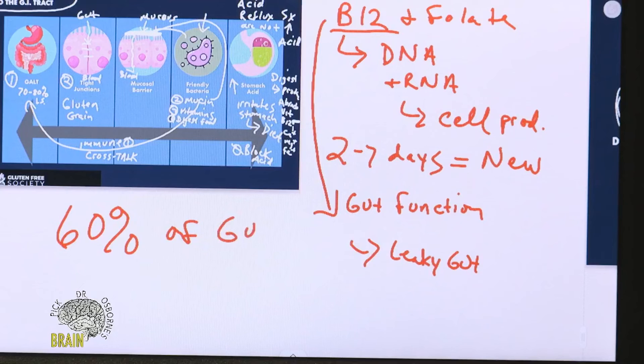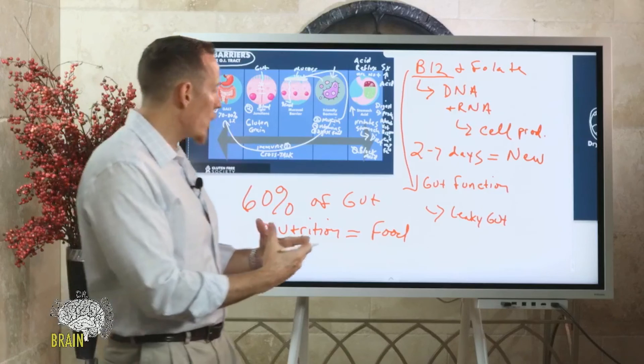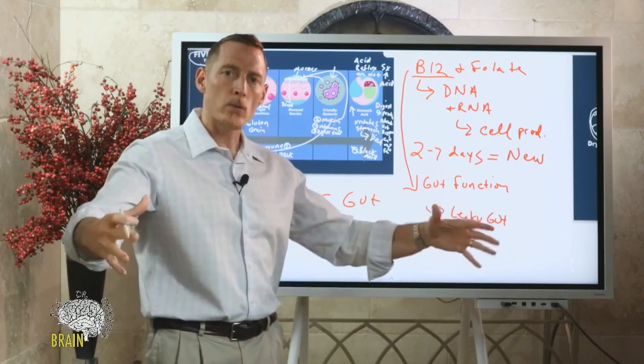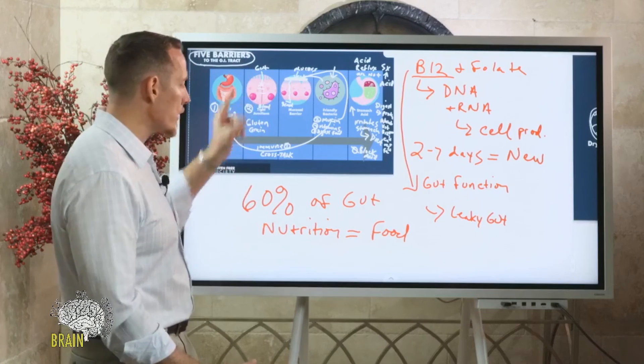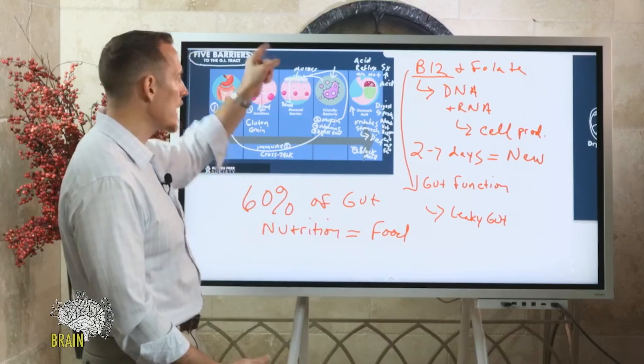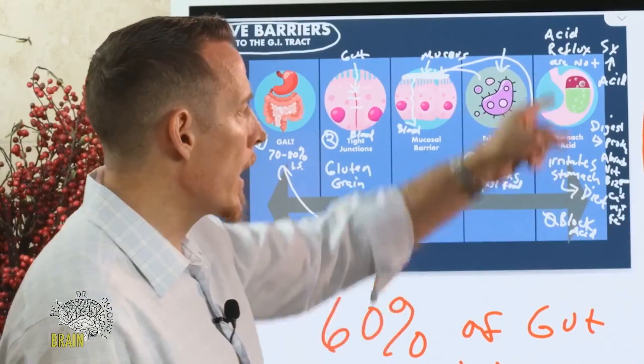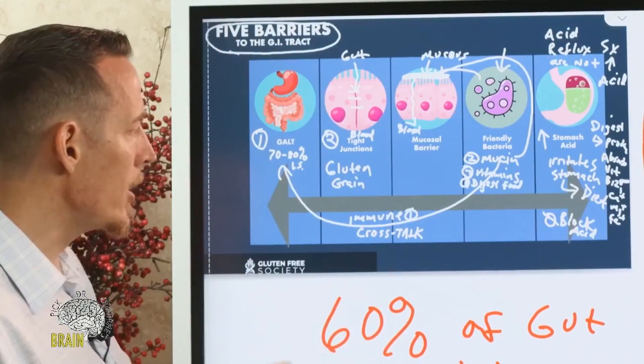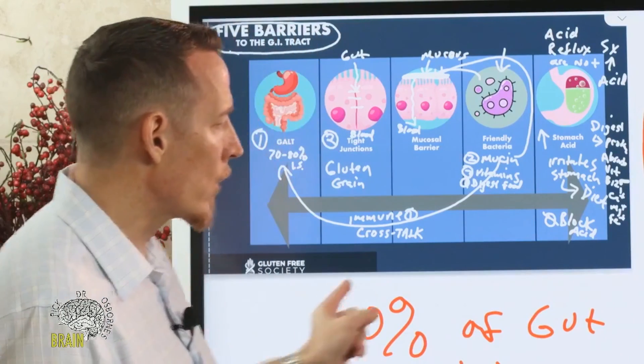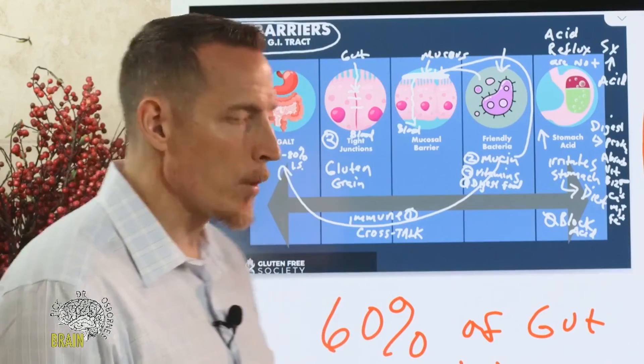Remember this statistic: 60 percent of gut nutrition is your food that you eat directly. Meaning that your gut, unlike other organs and other tissues in your body where the nutrients are processed and then dispersed through the bloodstream - your gut directly gets 60 percent of its nutrients from the food from the lumen of the intestinal lining. If you're compromised in your ability to digest, then your gut becomes compromised first. When your gut is malnourished, the rest of your body over time starts to become malnourished. This is why it's such a vicious cycle.